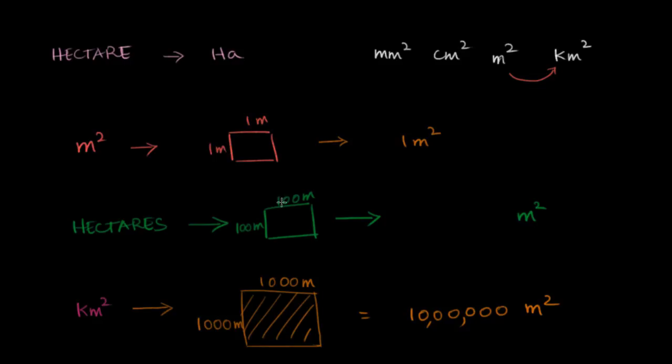That's going to be a hundred times a hundred, or 10,000 meters squared. So hectares comes right in between meters and kilometers. So one meter squared to 10,000 meters squared for a hectare to 10,000,000 meters squared for kilometers.